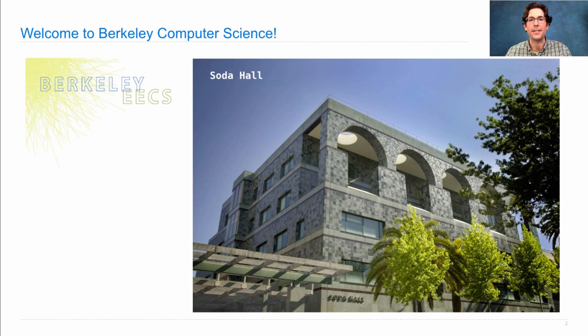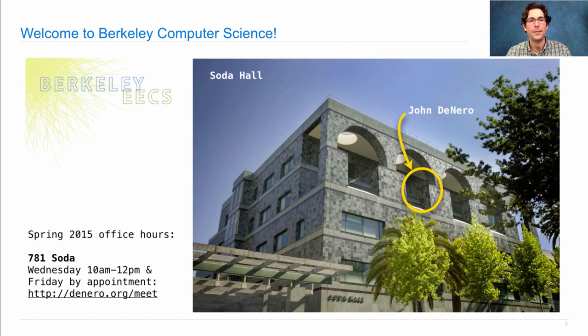Berkeley Computer Science is housed in Soda Hall. My office is here and I'm John DeNero. My Spring 2015 office hours are from 10 to 12 on Wednesday or Friday by appointment, also from 10 to 12. Go to denero.org slash meet to set up an appointment. I'll see you there.